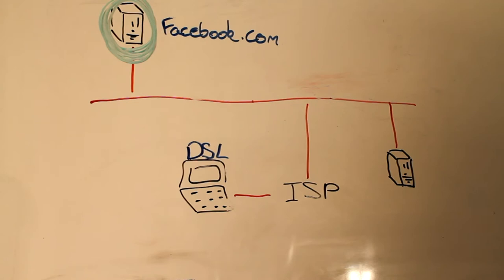For now, say our computer runs on DSL and I want to get to Facebook.com. I go through my DSL, then to my ISP, to the internet and then to Facebook.